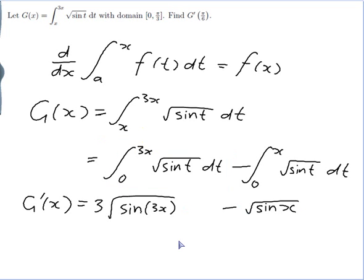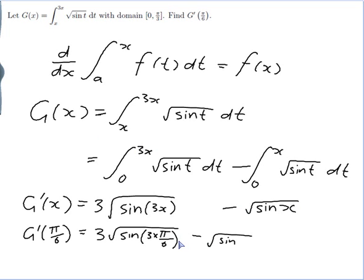Now I just need to put pi on 6 in it to find g dash pi on 6. So that would be 3 the square root of sin 3 times pi on 6 minus the square root of sin pi on 6. So this is equal to 3 times the square root of sin pi on 2 minus the square root of sin pi on 6.